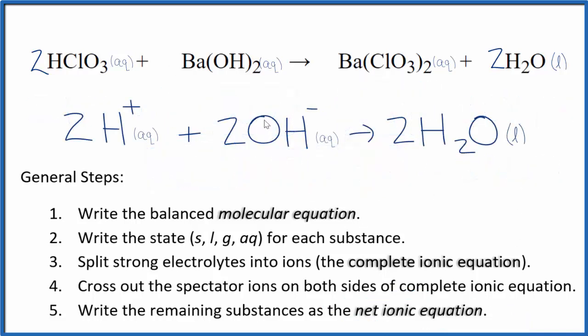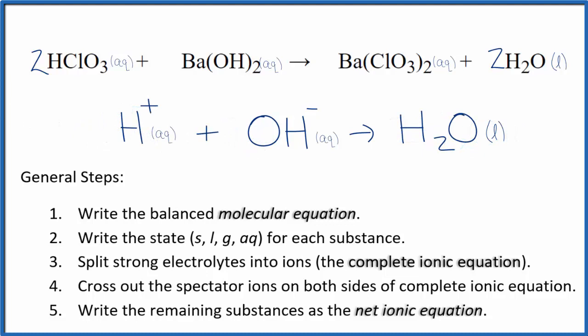So this is the balanced net ionic equation for chloric acid plus barium hydroxide. Note that we have a two in front of each of these substances. So we can just reduce that down to one. And we don't write the one by convention. Note also we have a positive and a negative. That gives us a net charge of zero. H2O, that's a neutral compound. So net charge of zero. So charge is balanced. And if you count the atoms up, they're balanced too.